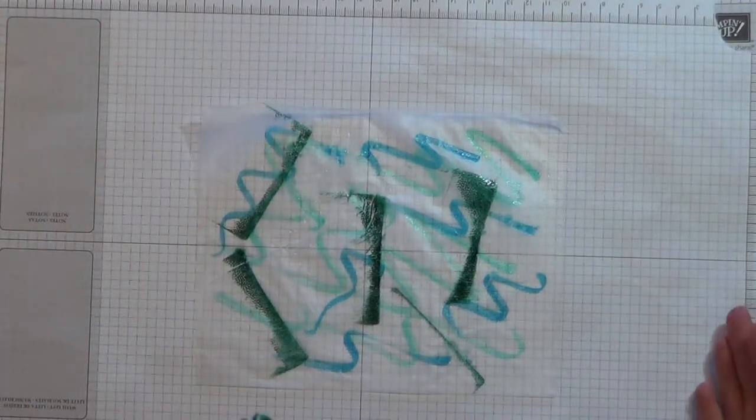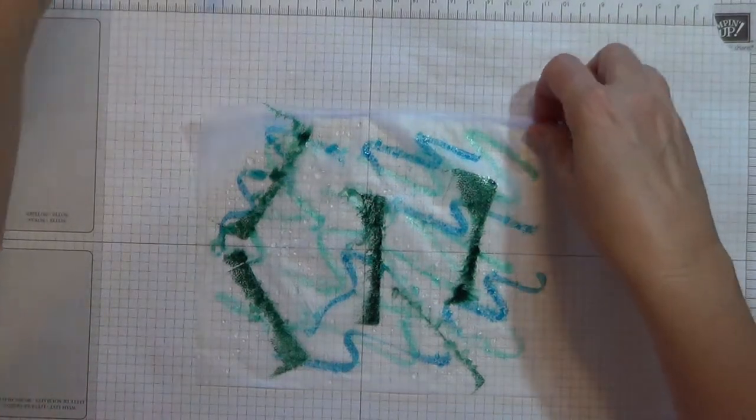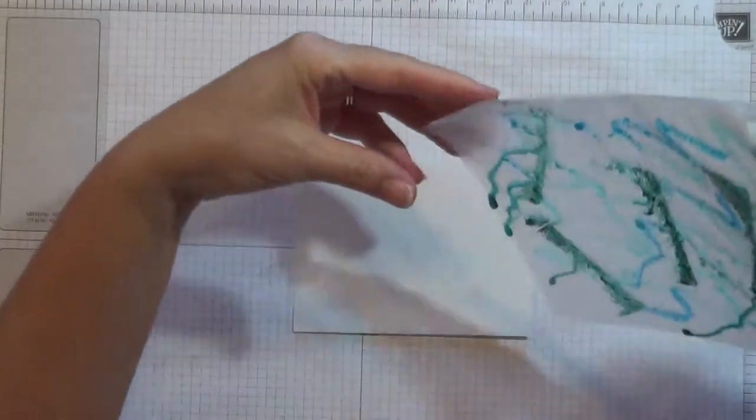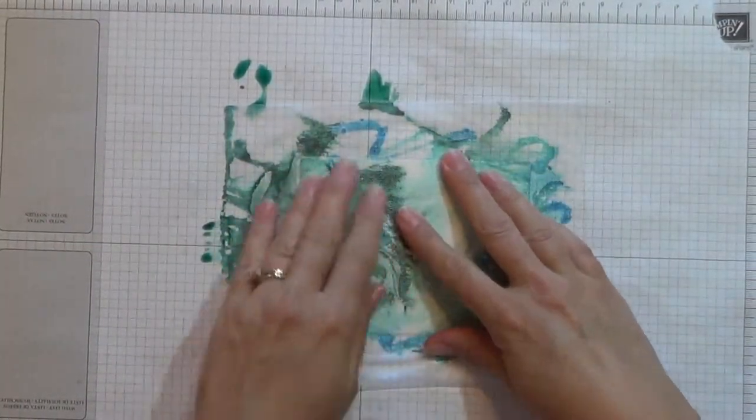And then I'm just going to spritz some water. Just some light spritzes, I want it to get wet all over, but just some light spritzes really. And then I'm going to put my glossy cardstock down and I'm just going to lay this on top. Press it in so the color gets on there.